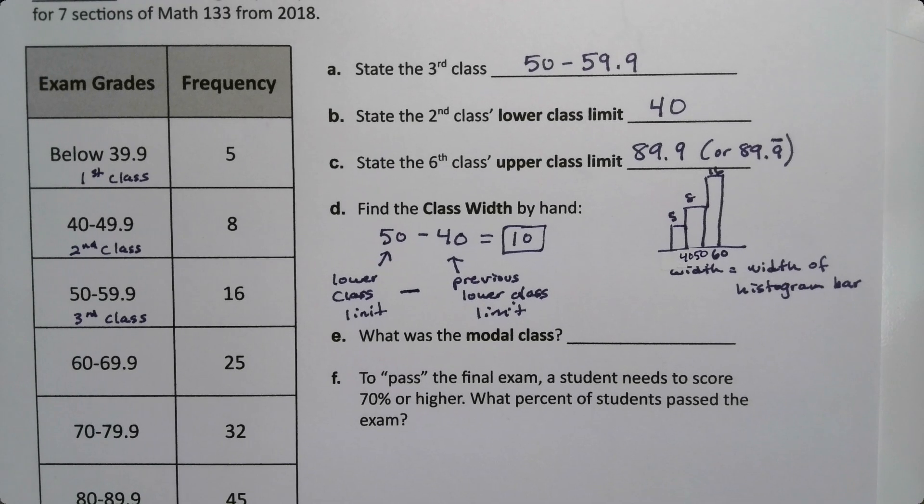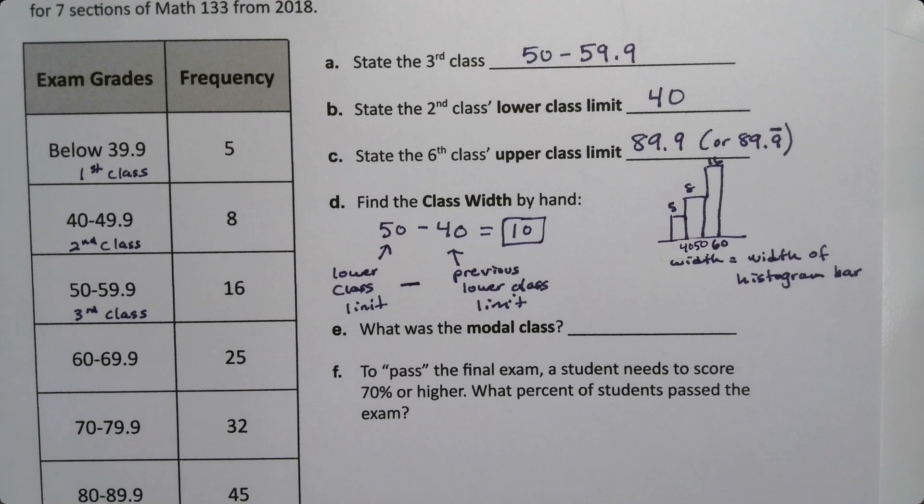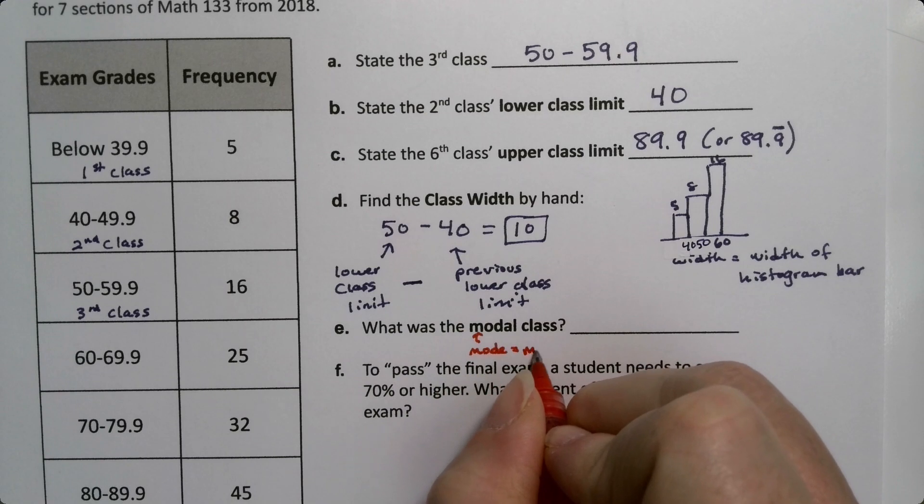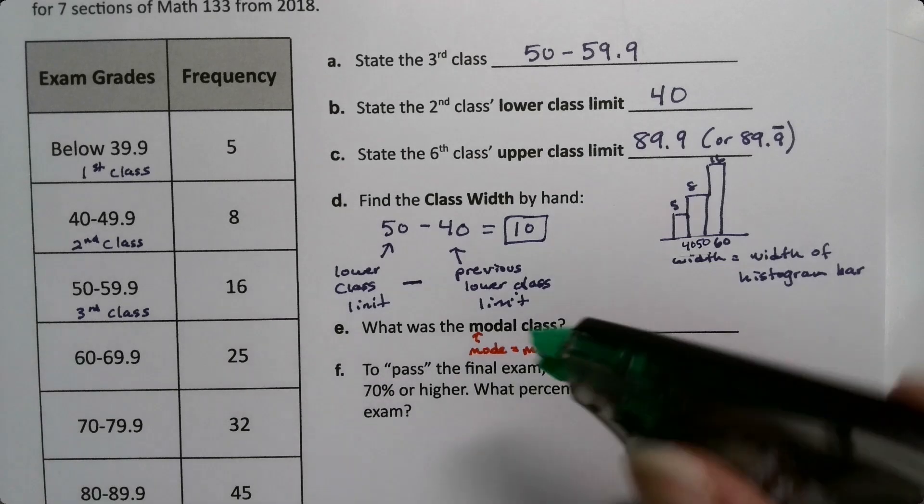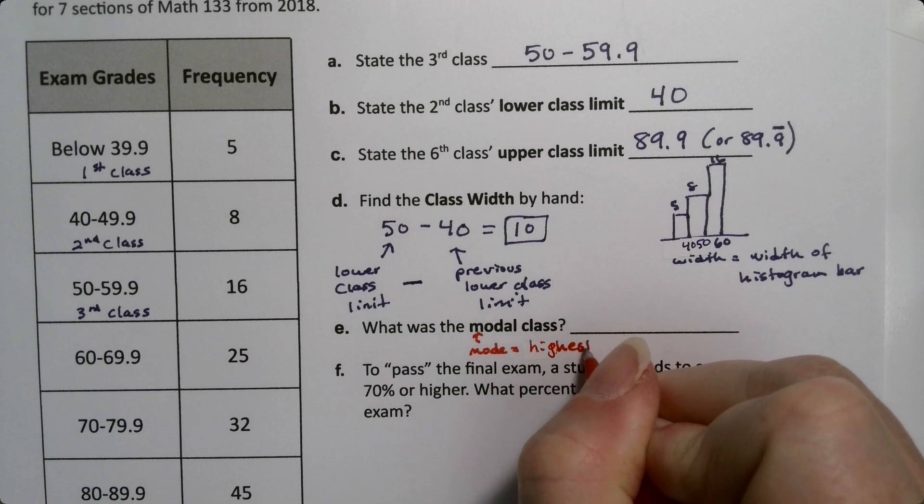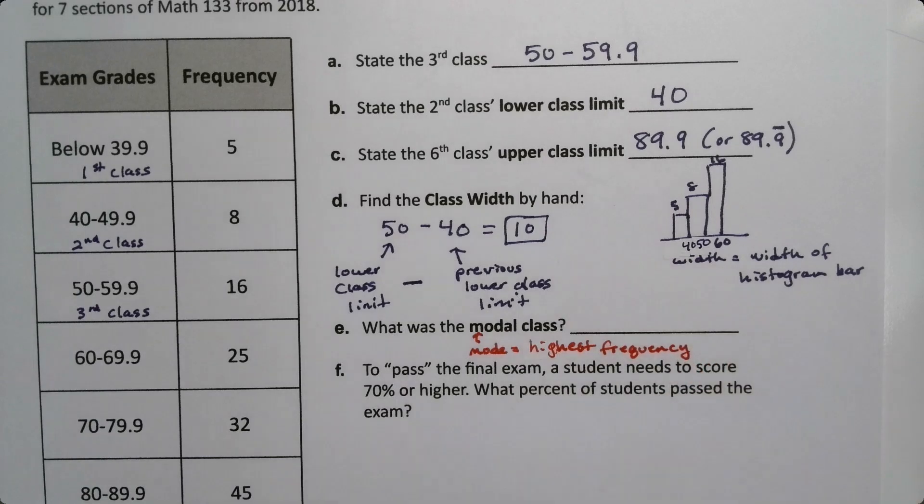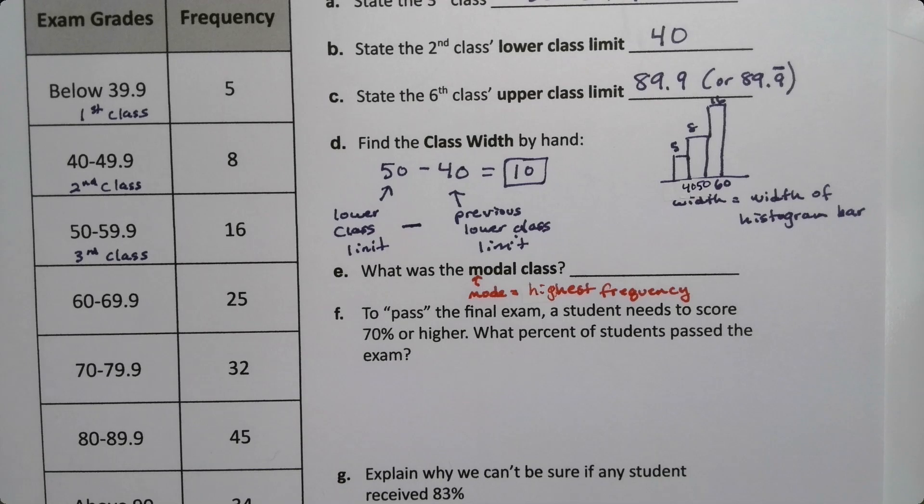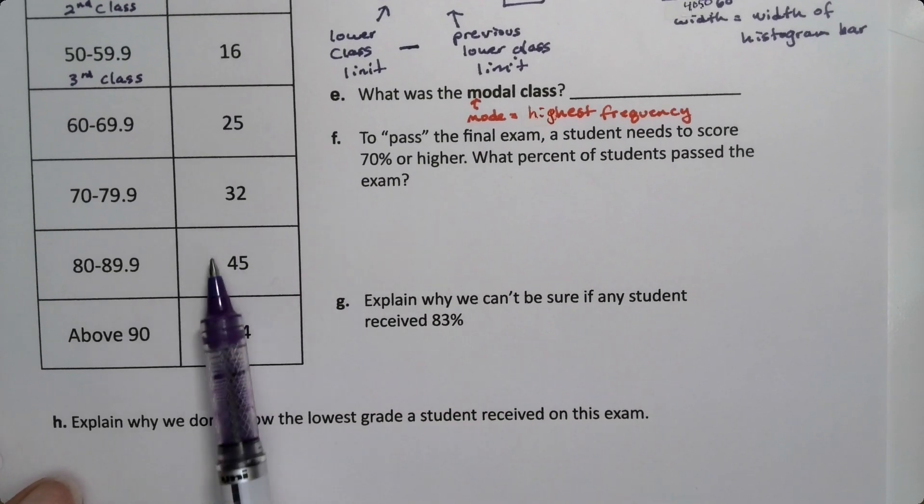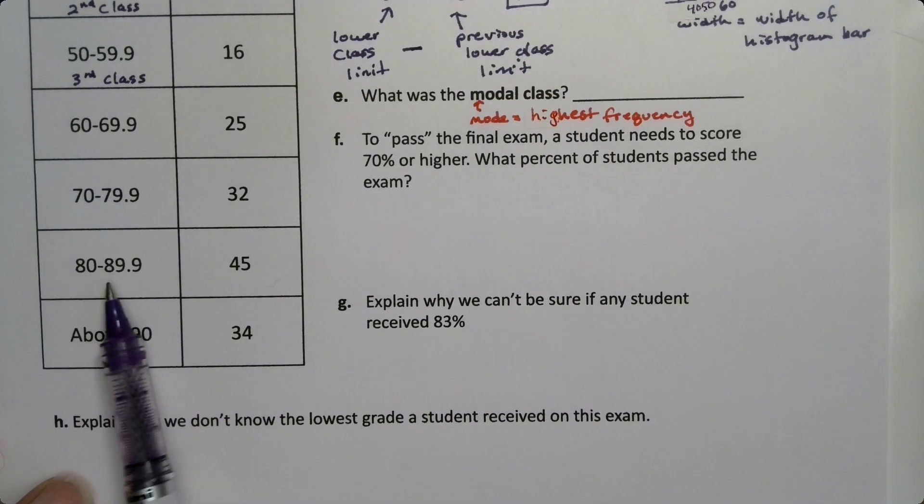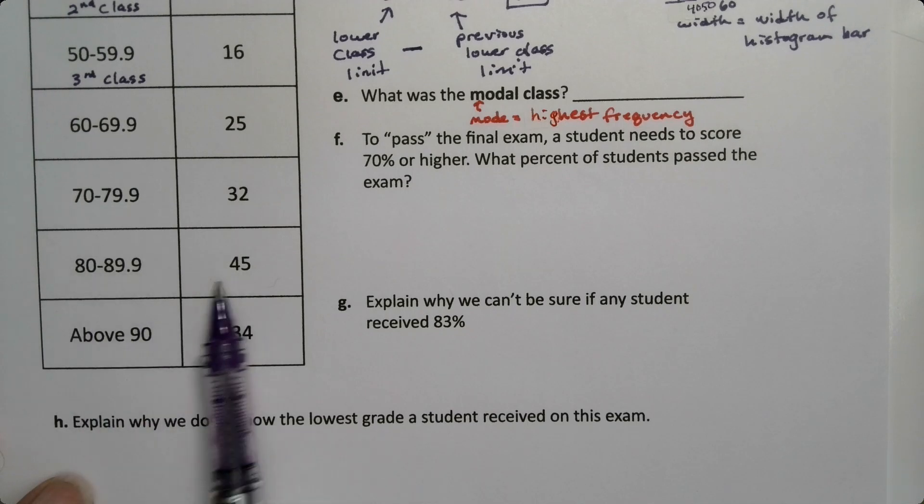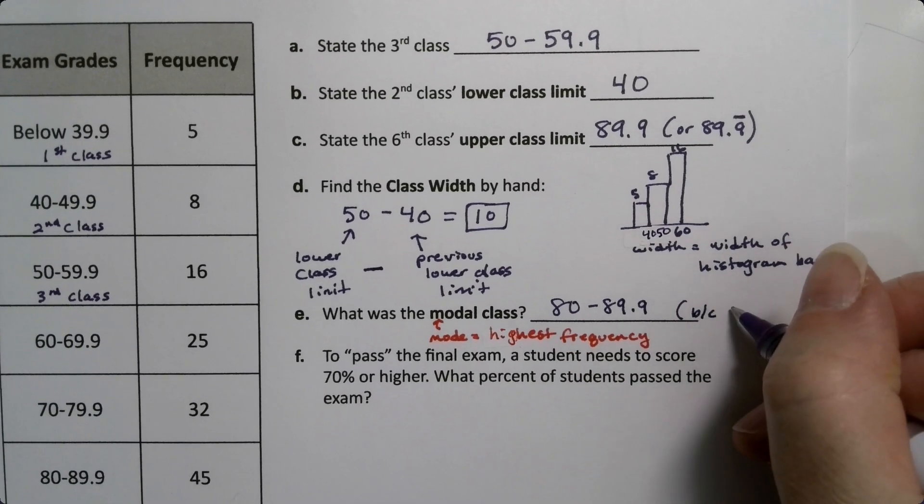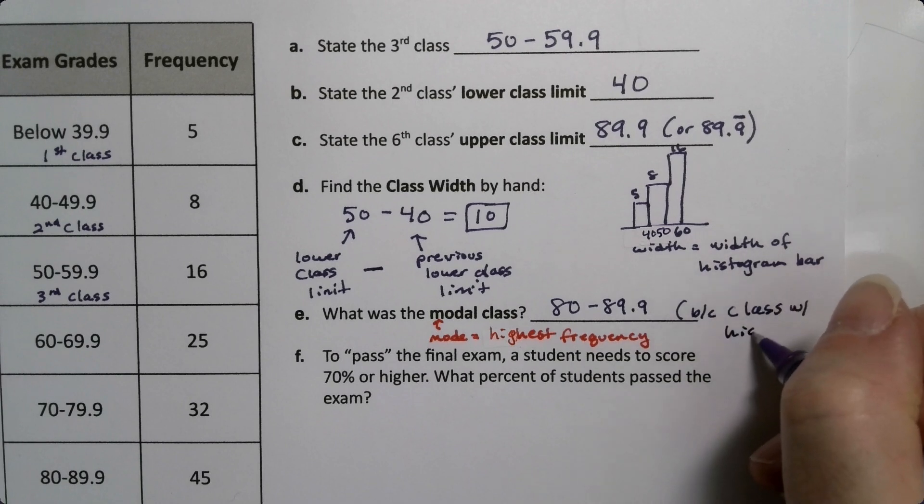Now what about the modal class? The modal class, we haven't quite seen mode yet, although usually you've seen it in school somewhere. The mode is the most frequent, or the highest frequency. We'll learn that in chapter 3. So the modal class is just saying, what class has the highest frequency? If I look at my frequencies, 45 is the highest frequency. Therefore, 80 to 89.9, that's the modal class. That's the class with the highest frequency. So 80 to 89.9, because that's the class with the highest frequency.